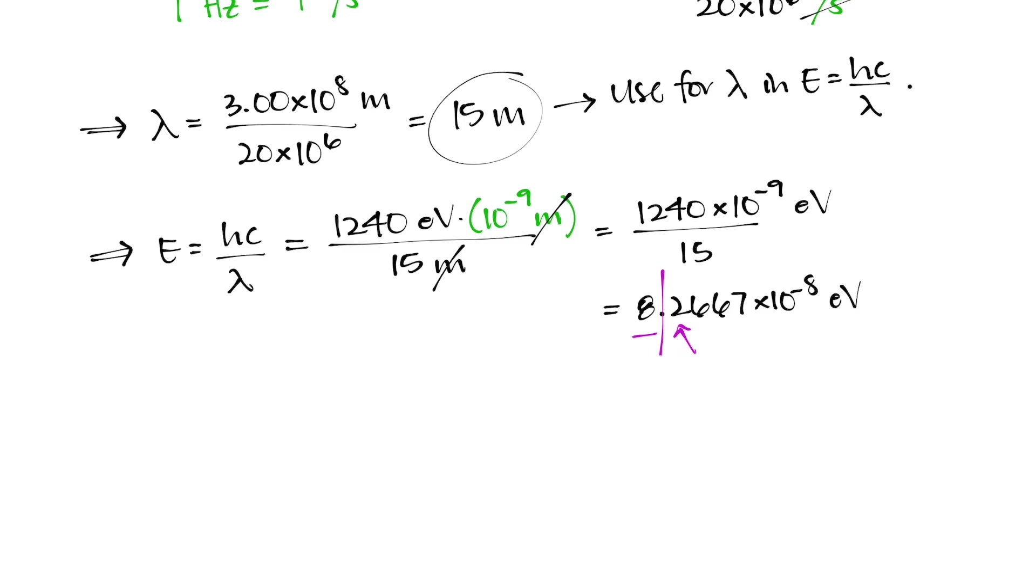So looking at the number that follows immediately after my cutoff point, that too will determine whether I'm rounding the 8 up or leaving it as is. But because it's a number that's smaller than 5, I can just go ahead and say that the energy associated with that particular wavelength is 8 times 10 to the power of negative 8 electron volts.